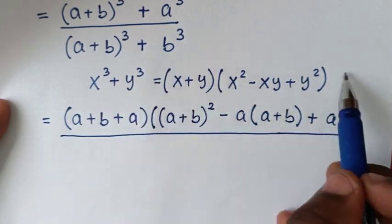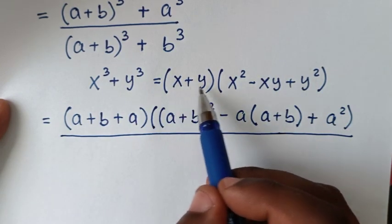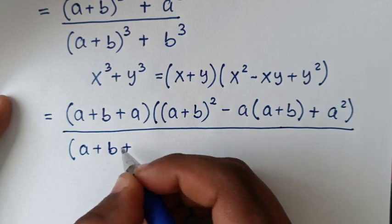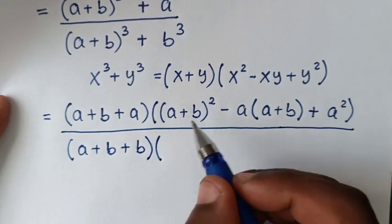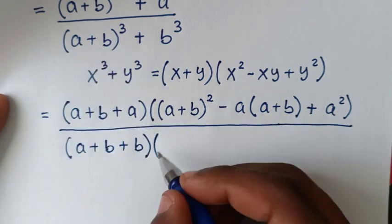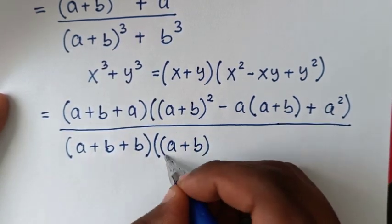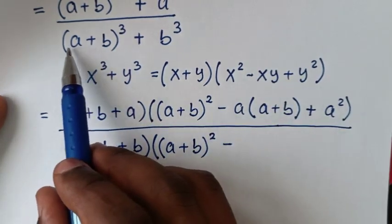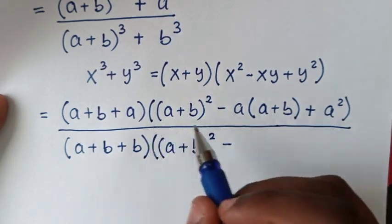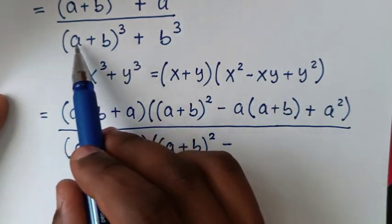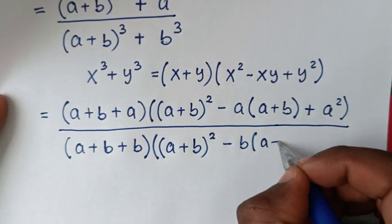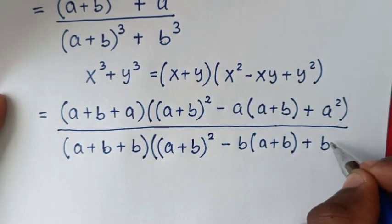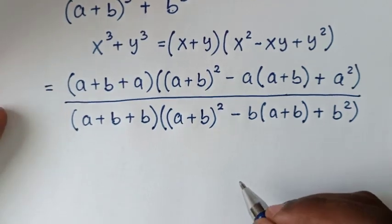In the denominator, applying the same rule: x plus y is (a plus b) plus b, so the first factor is (a plus b plus b). Then x squared is (a plus b) squared, minus xy is (a plus b) times b, plus y squared is b squared.